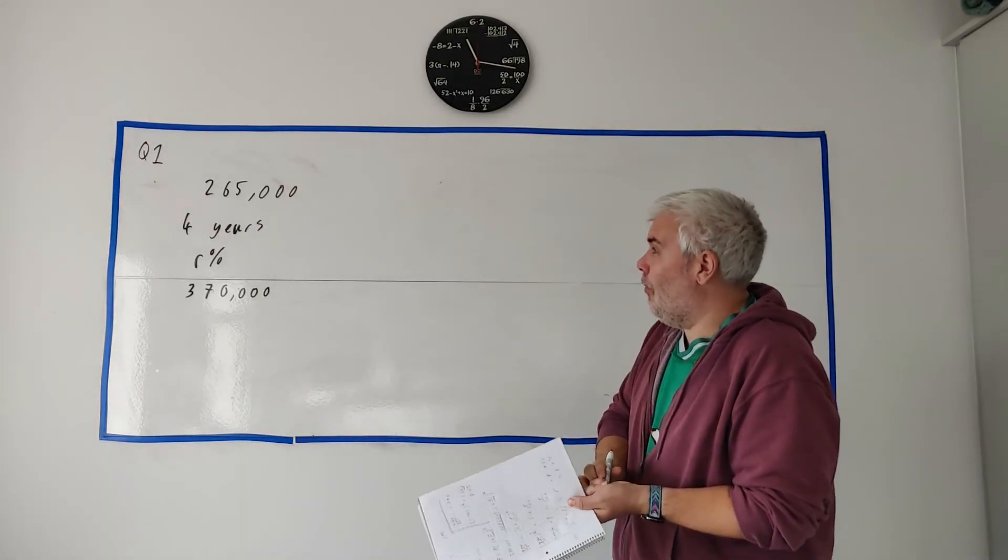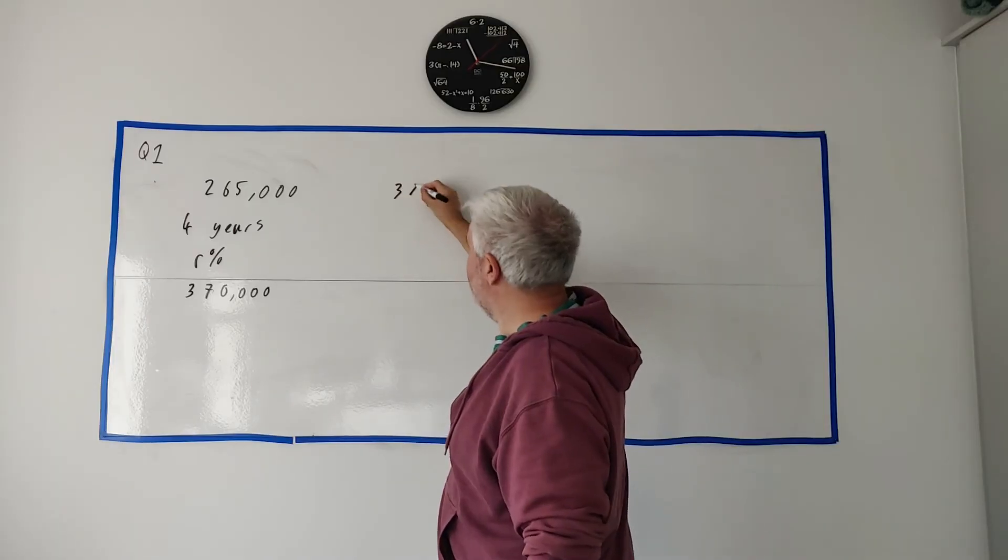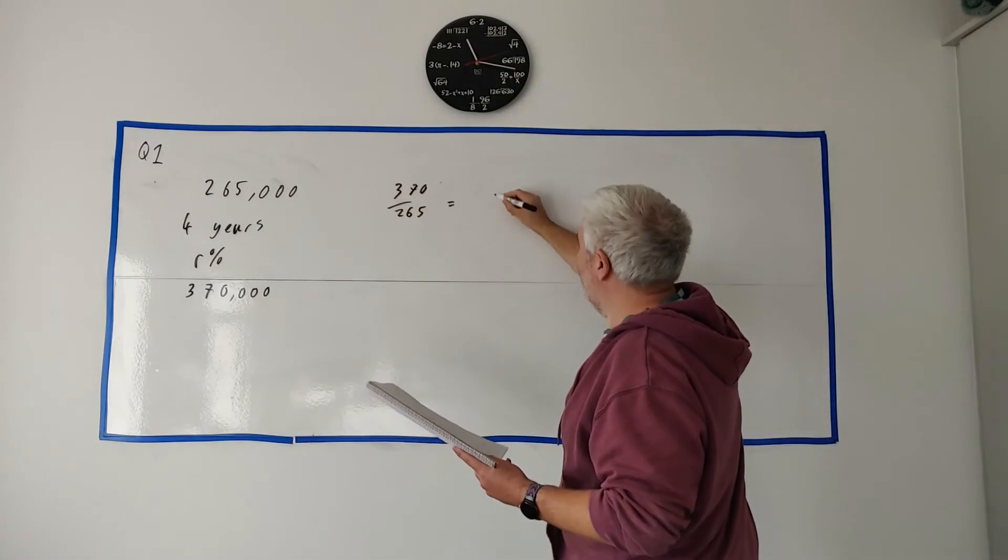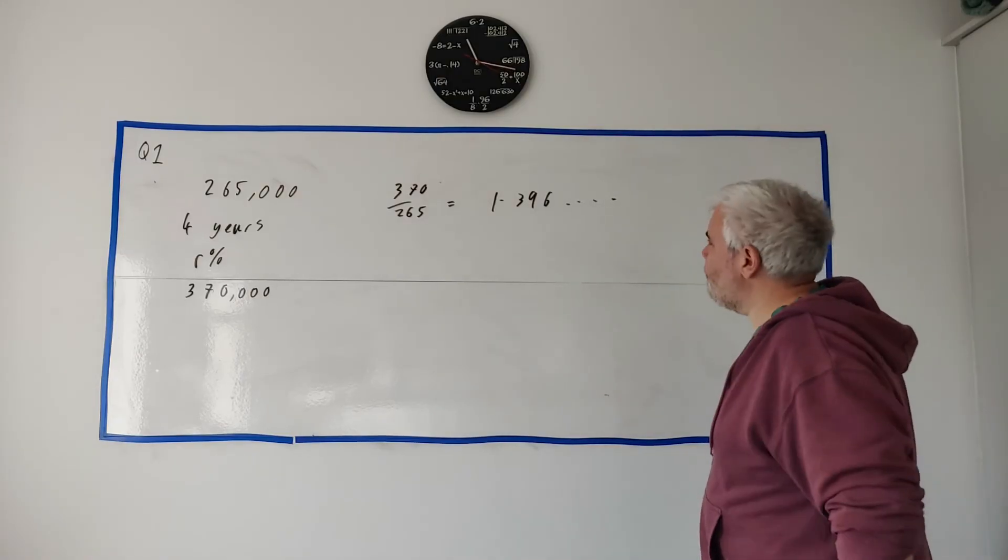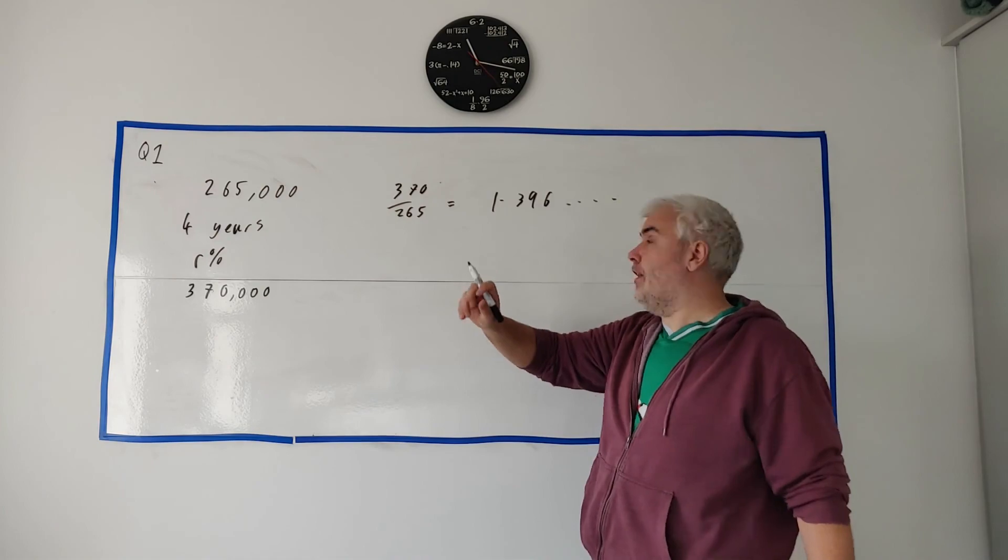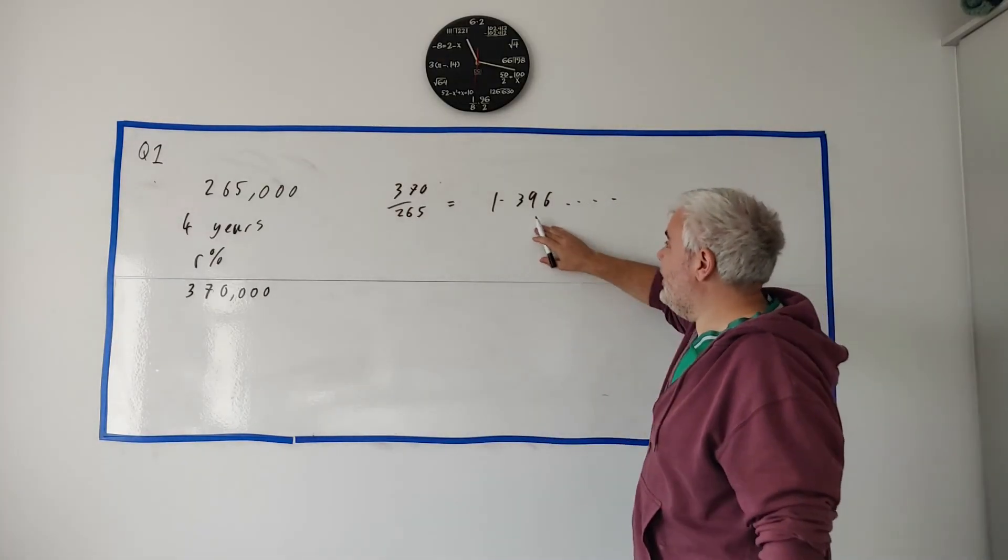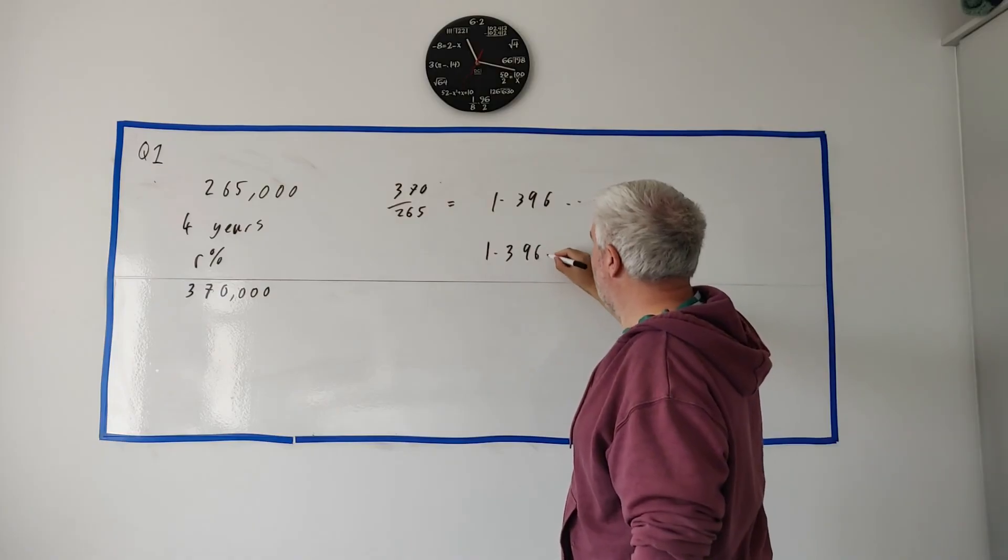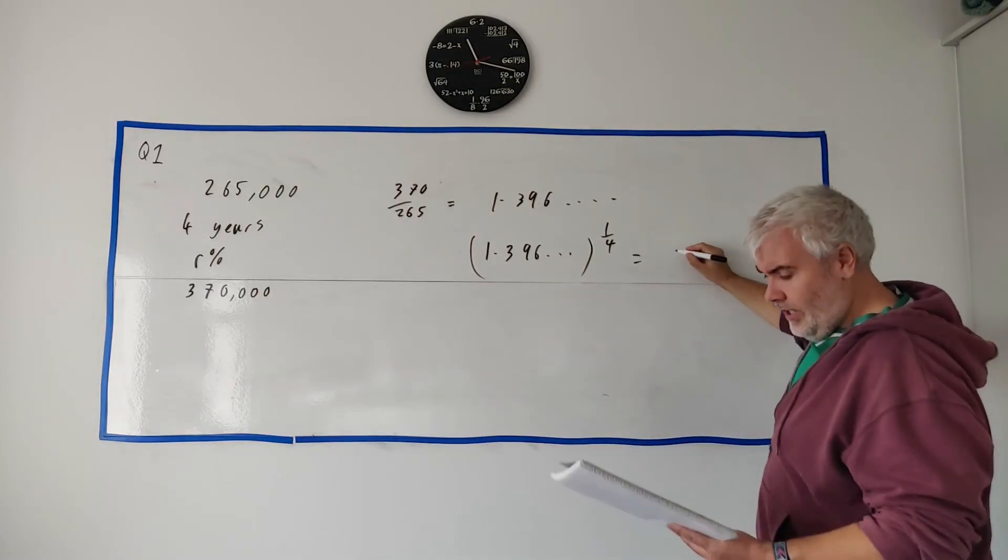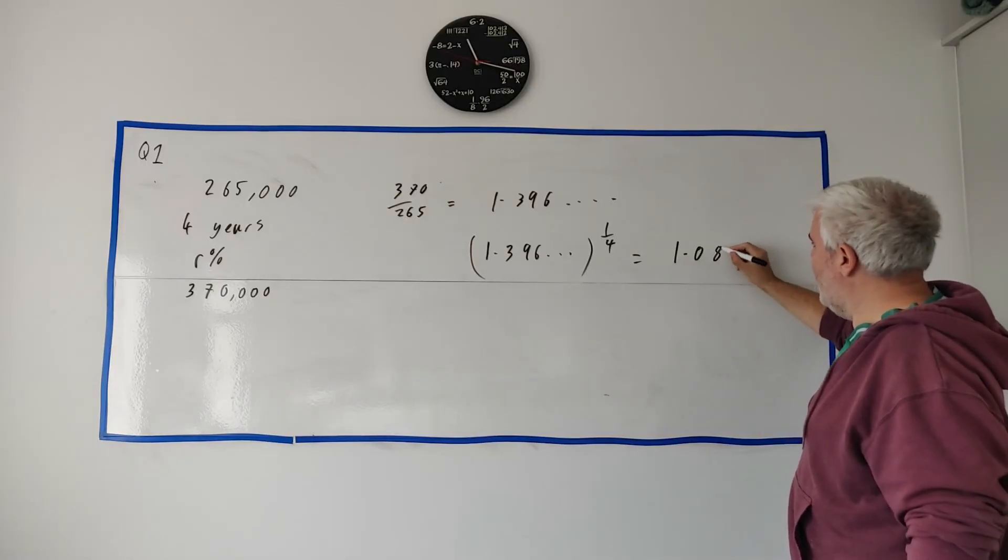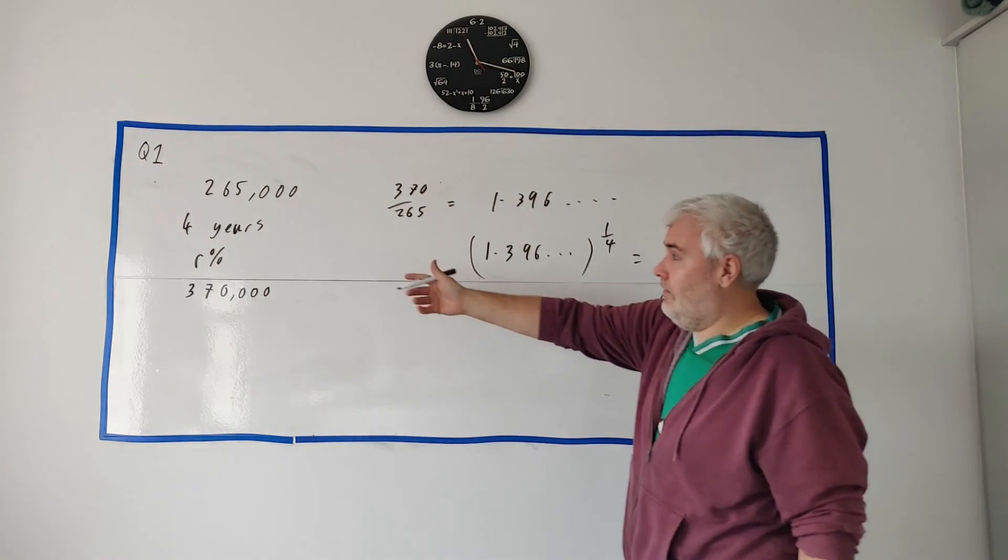Before I finish I promised I'd show you how I would do this much quicker than doing all that algebra. I'd simply just get this number divided by that number, 370 divided by 265. And that will equal 1.396. And that's how much it's increased over four years, 39.6%. But I want over one year and at a constant rate. And that's easy to get once you have this number. It's just 1.396 to the power of 1 over 4. And it'll come out as 1.087 or 8.7%. So that's how I would do that question.